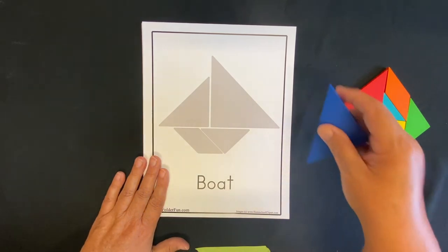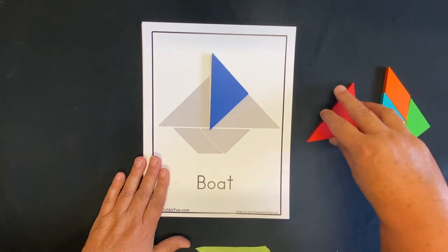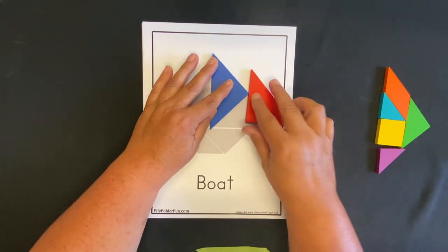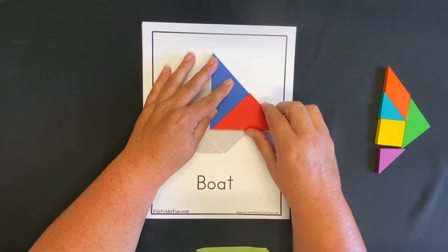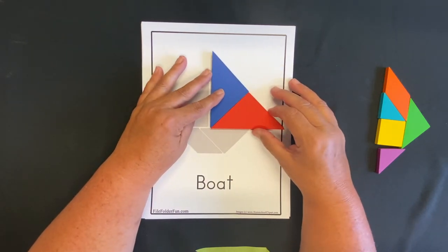First we're going to take our big triangle - actually both of our big triangles. Miss Tracy gets confused too because, like I said, math. So that's our sail.